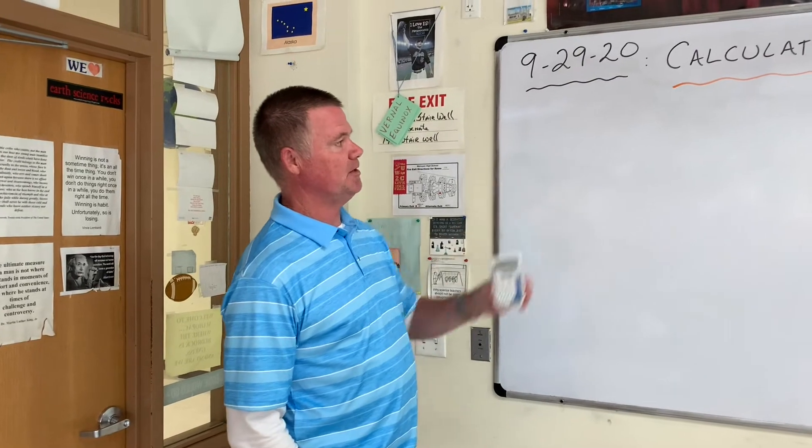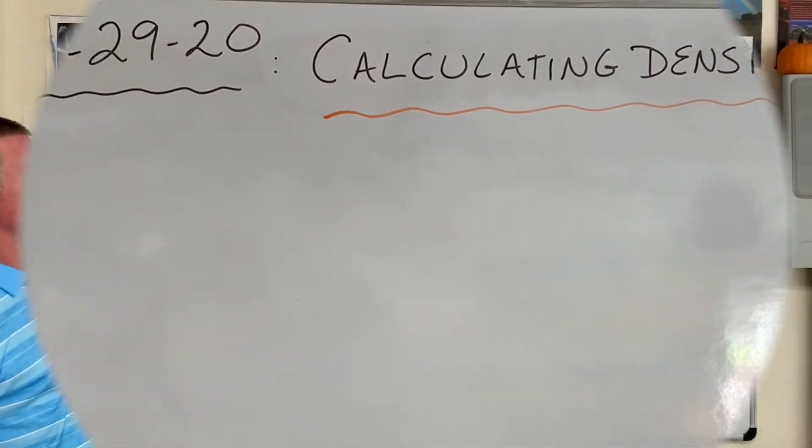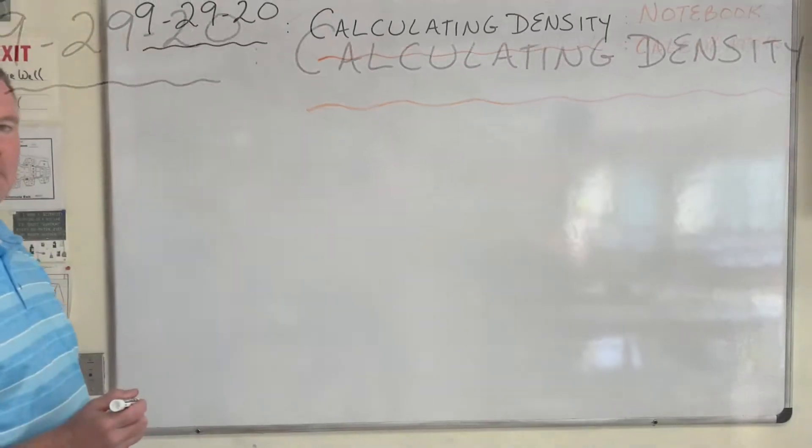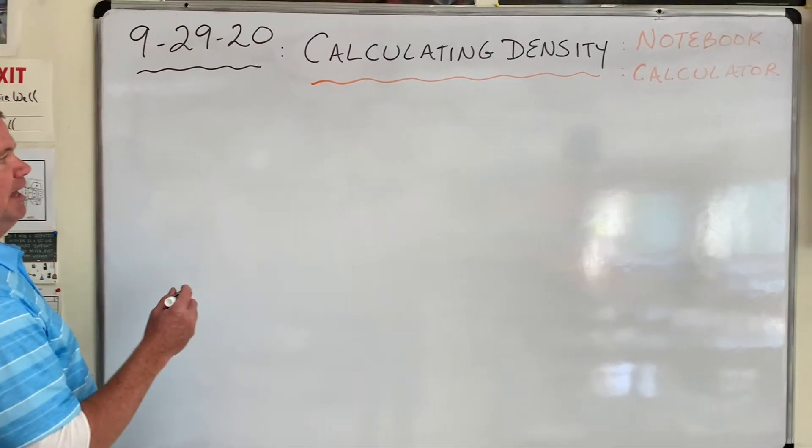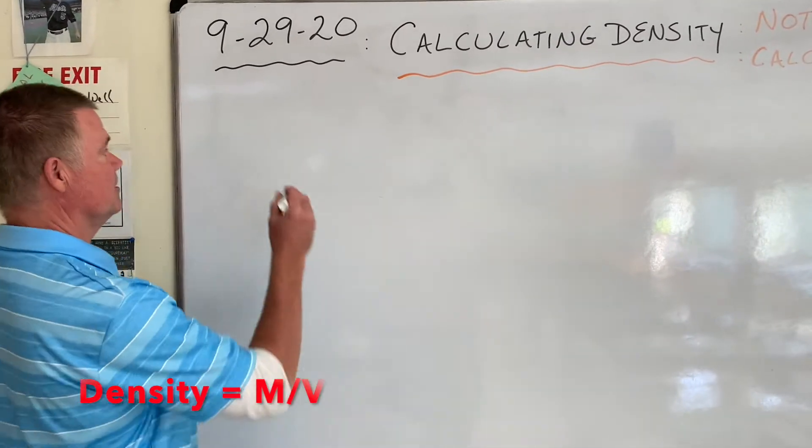We'll begin with this information in your notebook. Please always make sure you have the date. Title today is calculating density. It's a formula for density. This is probably a review. Density is a measure of comparing the mass and the volume of any object or substance.